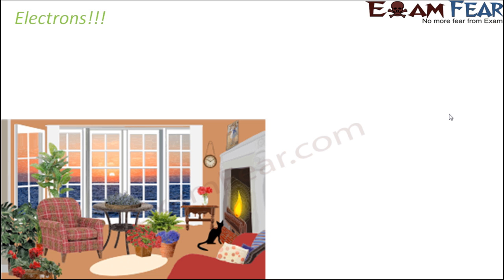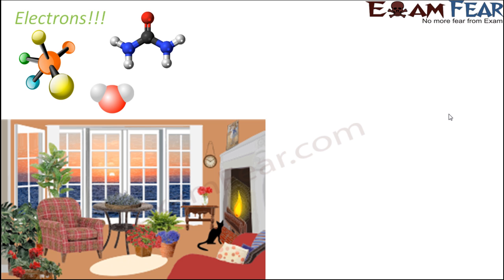What are electrons? When you look around yourself, you see so many things: chairs, tables, walls, buildings, sky, water, other animals. Anything in this universe that occupies space — whether a big space or an extremely tiny space — is called matter. So basically, anything we see around ourselves is matter, and this matter is made up of smaller units called molecules.